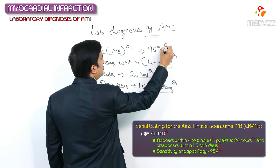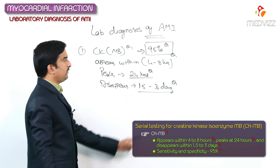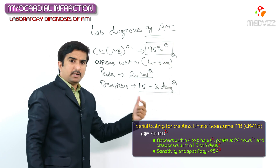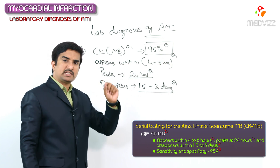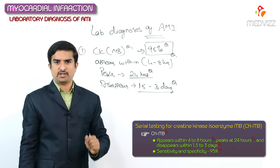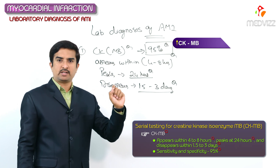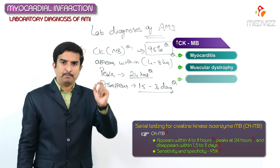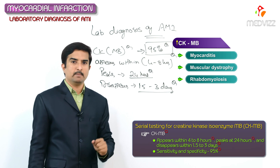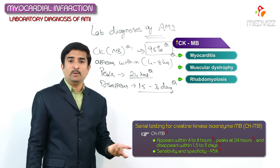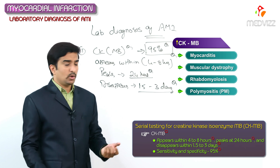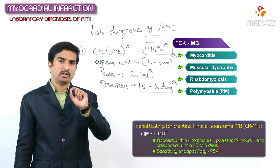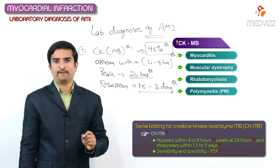The sensitivity as well as specificity for CKMB is 95 percent — also an important MCQ question. However, CKMB is not specific only for acute myocardial infarction because it may also be increased in myocarditis, muscular dystrophy, rhabdomyolysis (rupture of the muscle), and polymyositis.